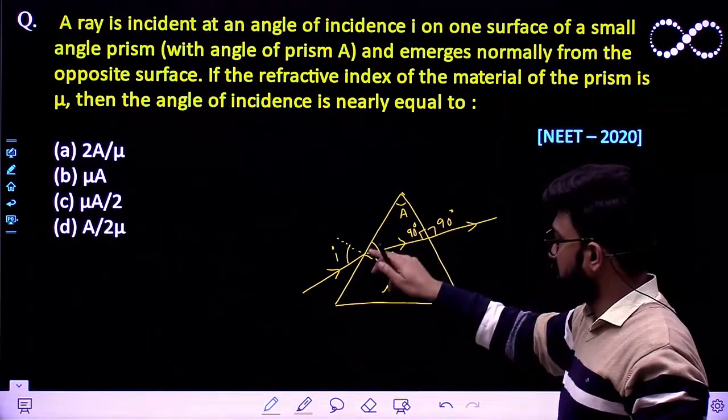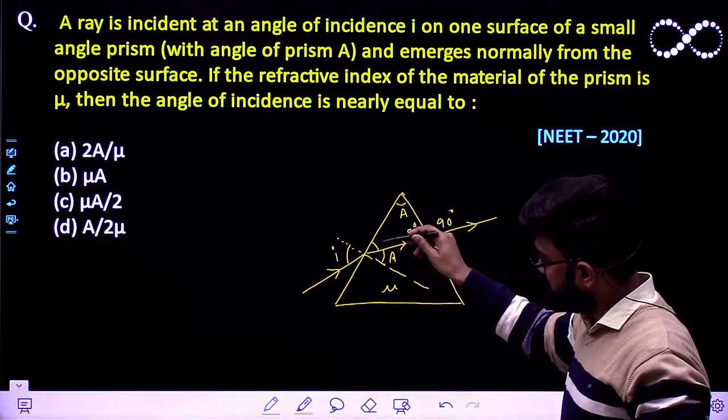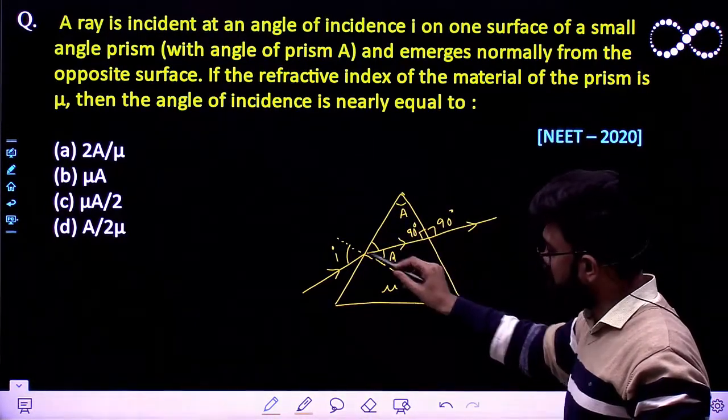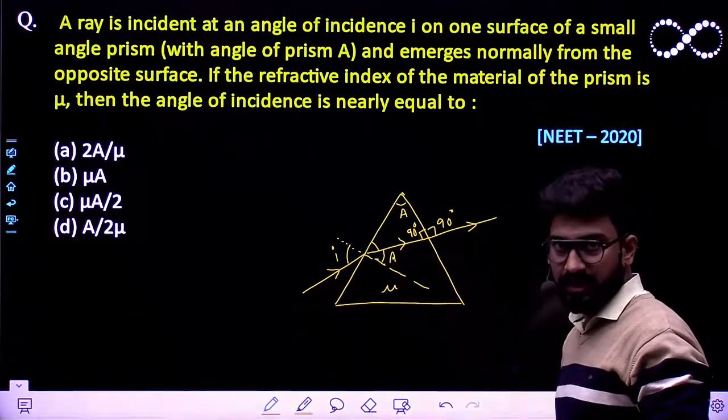In this particular triangle, this angle is 90 and this angle is A, so this angle is 90 minus A. Since this is normal, the angle of refraction must be equal to A.